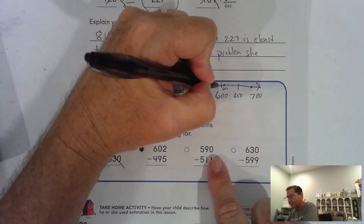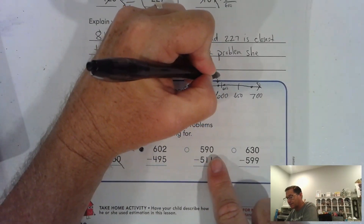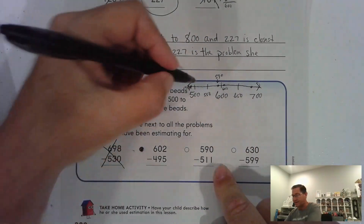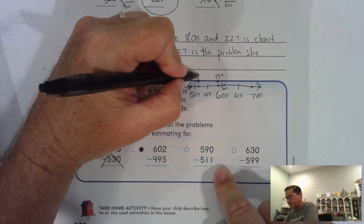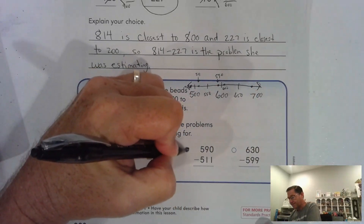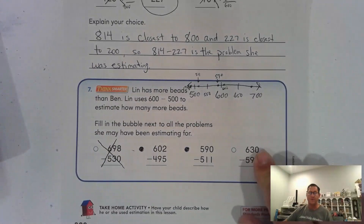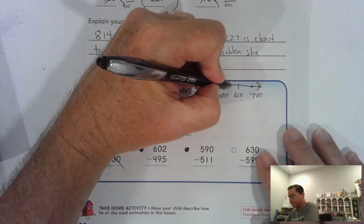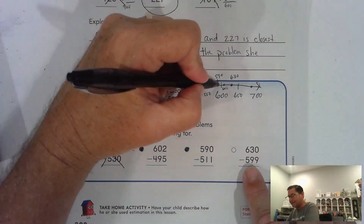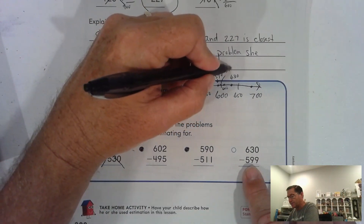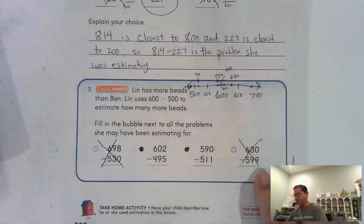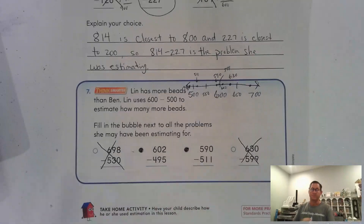590 is close to 600 and 511 is closer to 500 — so 590 minus 511 works too, giving 600 minus 500. 630 is closer to 600. But 599 is also closer to 600, so that problem would be 600 take away 600 — not it. So it's just the two middle problems: 602 minus 495, and 590 minus 511.